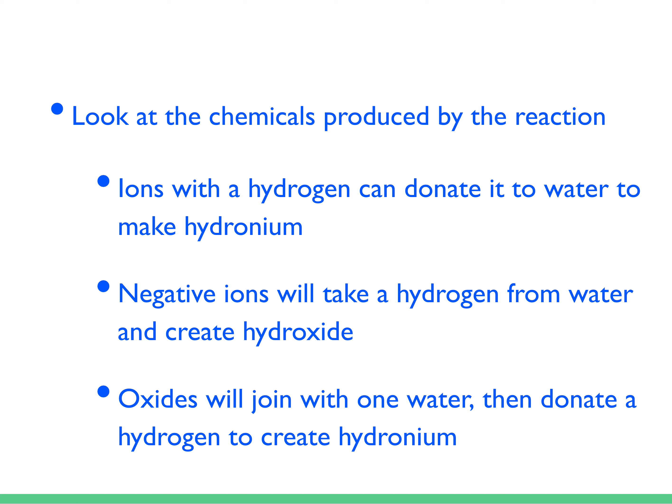Our next step is to predict the products. Ions that have a hydrogen will be able to donate the hydrogen to water to make a hydronium. So you would write the ion minus the hydrogen and a positive charge, as well as a hydronium ion, as your products.